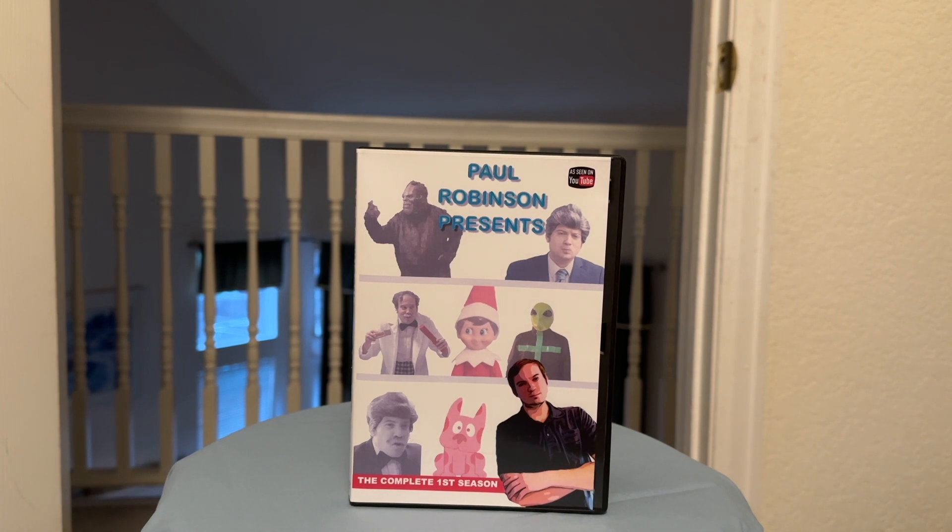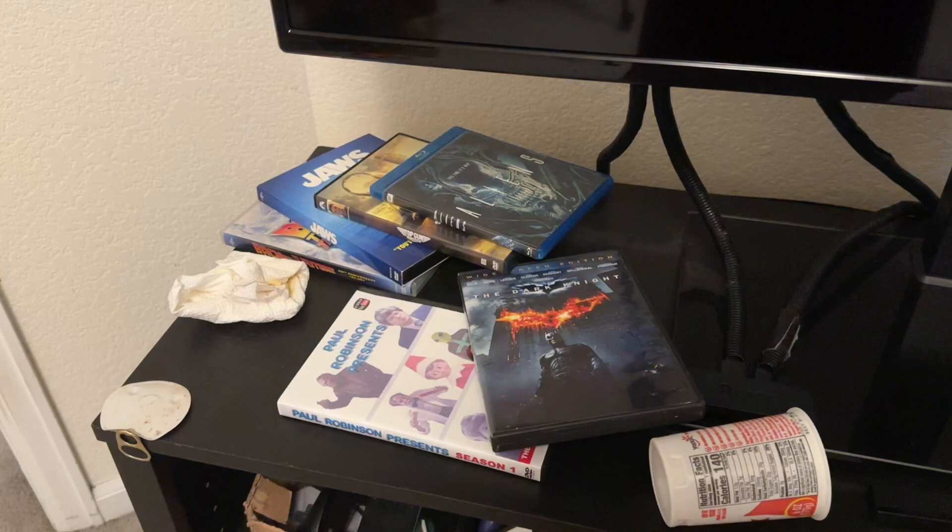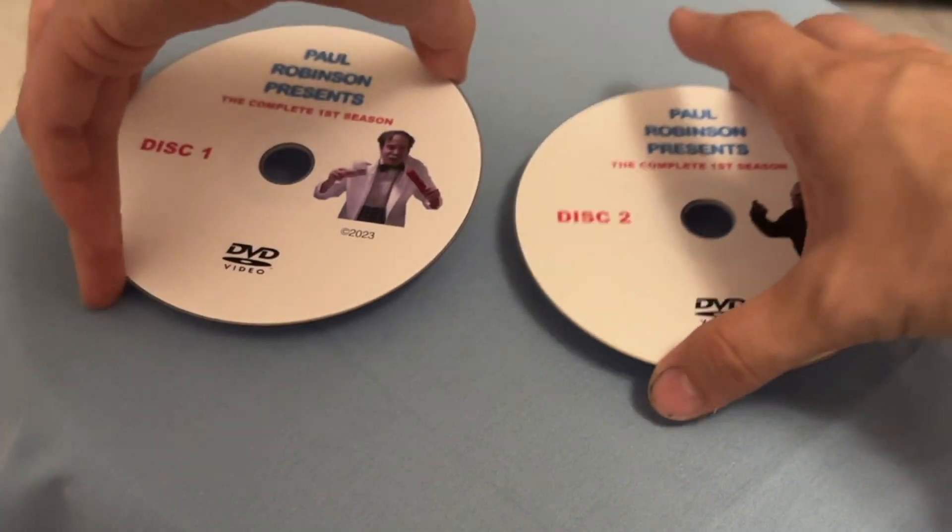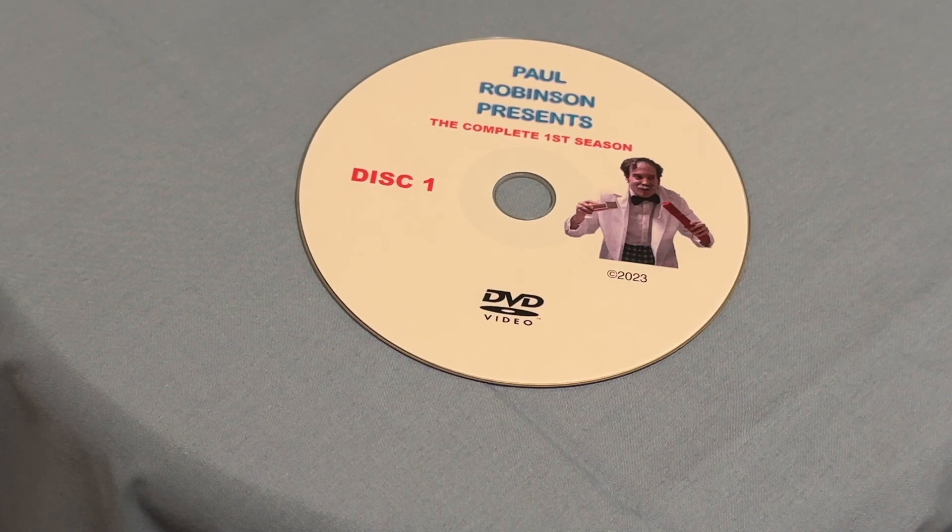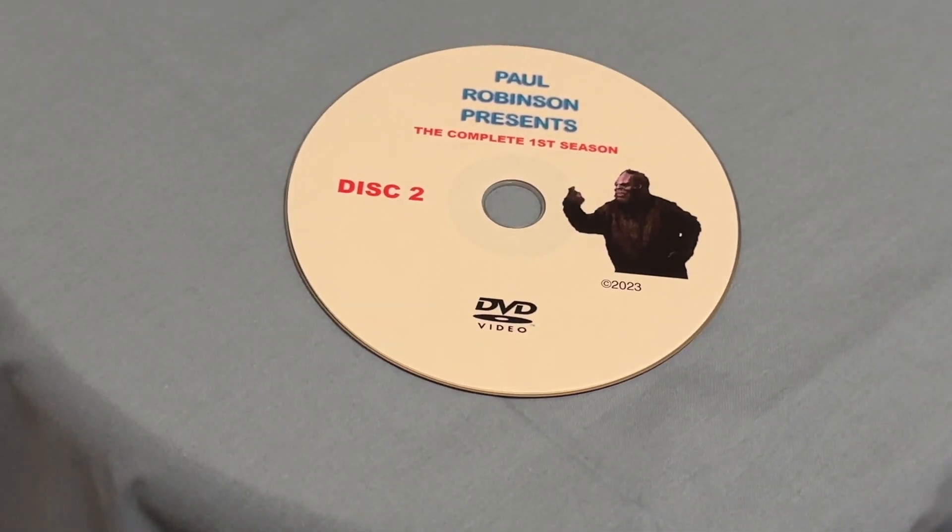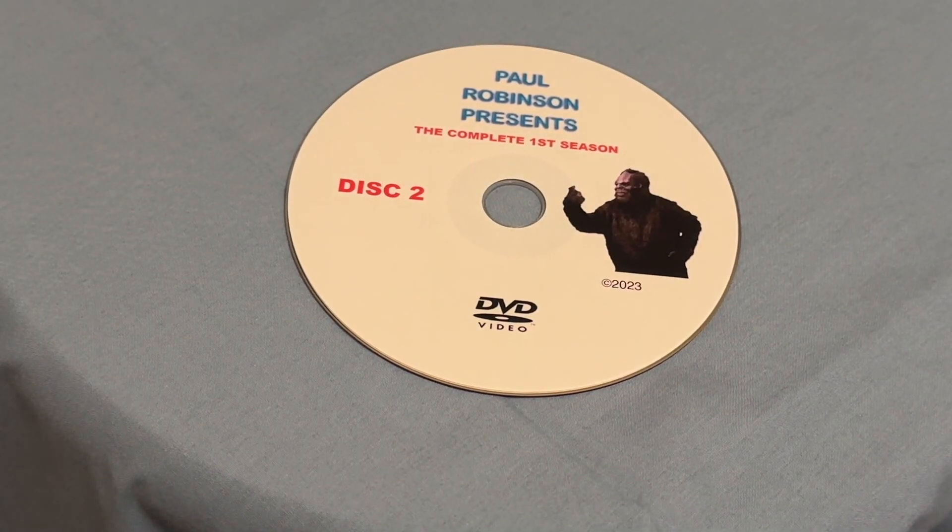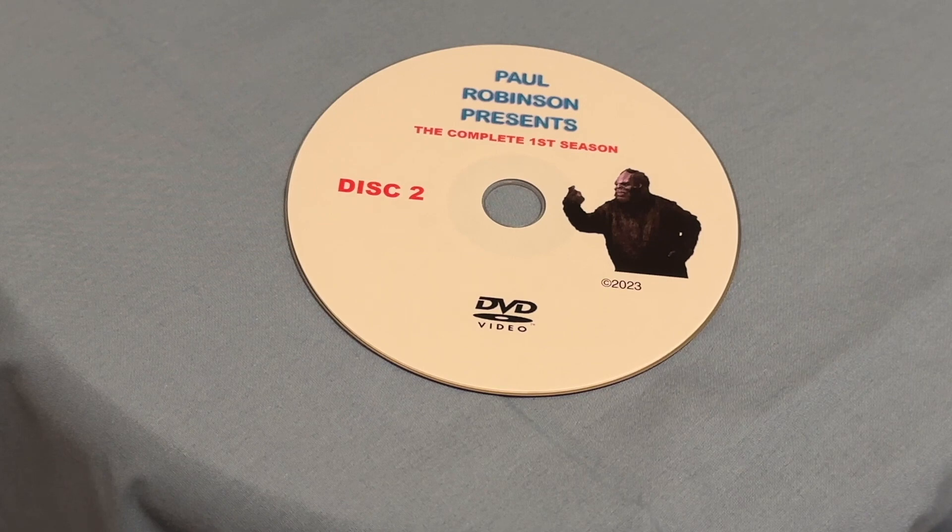Introducing Paul Robinson Presents, the complete first season on DVD. I know what you're thinking. I can just watch this on YouTube. And you're right. But this is truly a collector's item. Something that can sit on your shelf and you can say, I own that. This collection includes two discs. Disc 1 has all ten Season 1 main episodes. And Disc 2 has all the short episodes along with the Throwback Thursday episodes. That's almost three hours of entertainment.